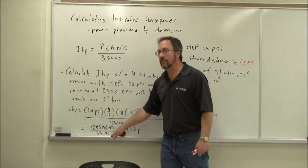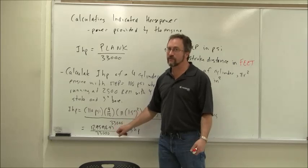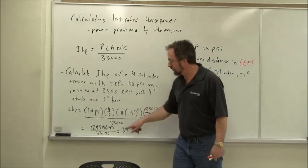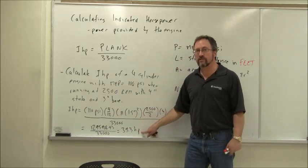We divide that by 33,000, converted into horsepower. It's 33,000 foot-pounds per minute. And what we calculate on the top is foot-pounds per minute. That will give me 39.3 horsepower.